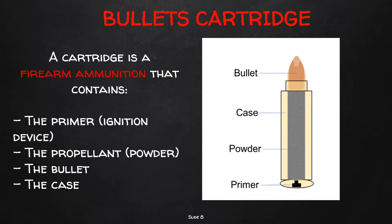A single unit of ammunition for a firearm is called a cartridge and consists of four parts: the case, the bullet, the propellant, and the primer. The primer is an impact- and friction-sensitive explosive used to ignite the propellant. The propellant is a chemical compound capable of combustion used to impart motion to the bullet. The bullet is the actual projectile that leaves the weapon and hits the target, and the case keeps all these components together. After pulling the trigger, the primer detonates, leading to combustion of the propellant, which propels the bullet out of the nozzle.